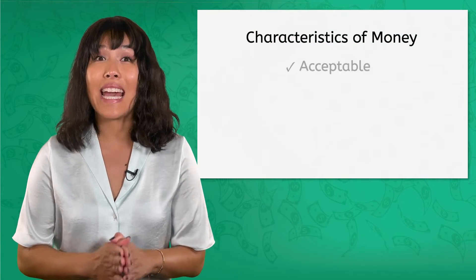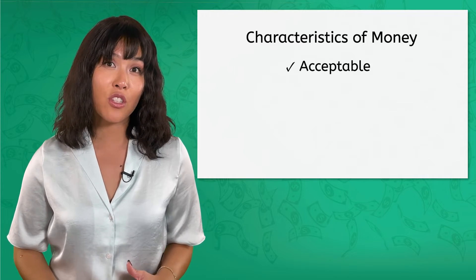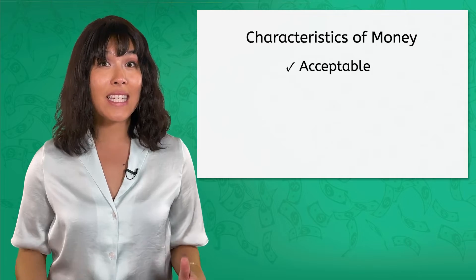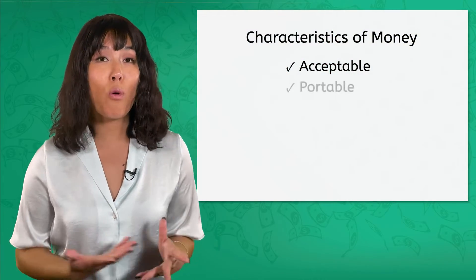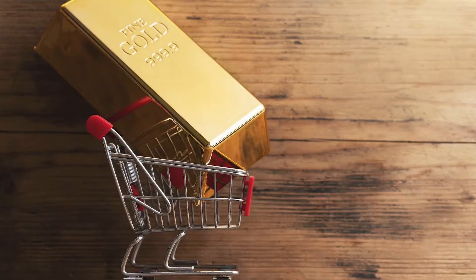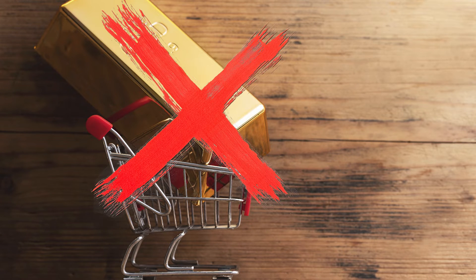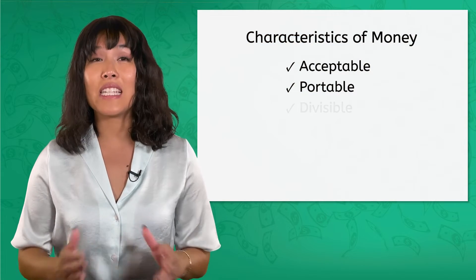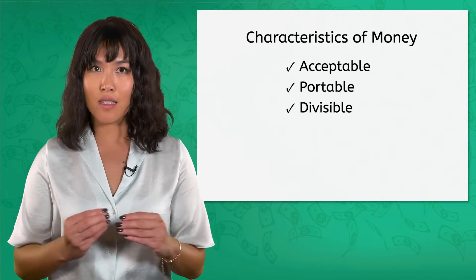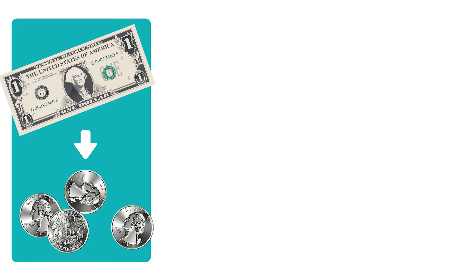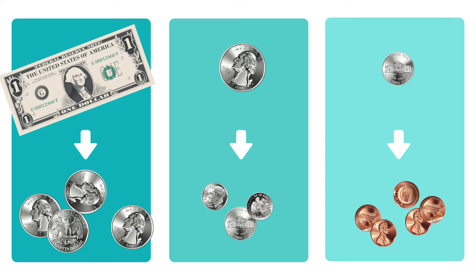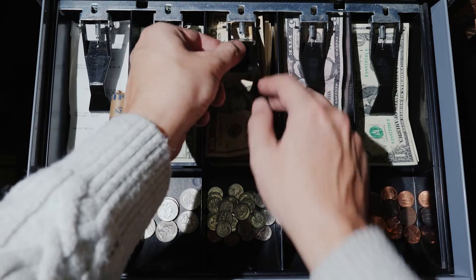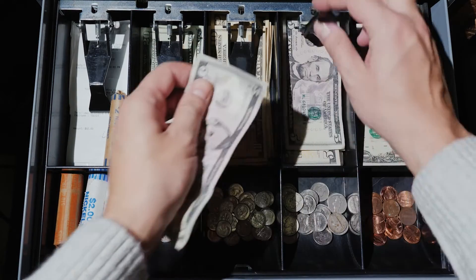First, money has to be acceptable — people conducting financial transactions all agree on its value and are willing to take it as payment. So that eliminates the board game money. It should also be portable, or easy to carry. Lugging around a gold bar that weighs almost 30 pounds is suboptimal. Money should also be divisible, meaning it can be broken down into smaller units. A dollar can be broken down into four quarters, a quarter into two dimes and a nickel, a nickel into five pennies. If you pay with that $100 bill, you'll get change back — that's going to be hard to do with a gold bar.